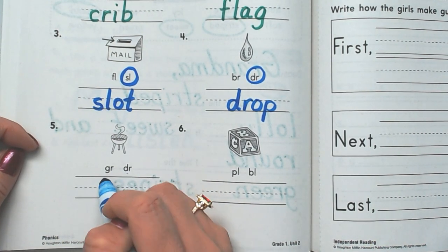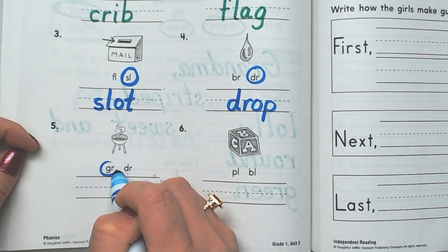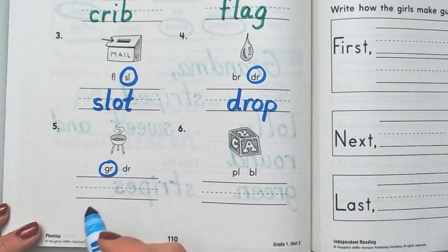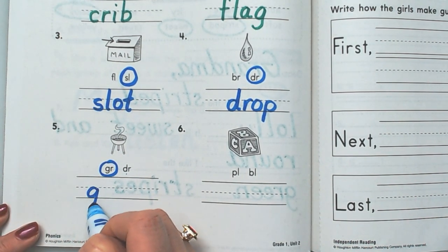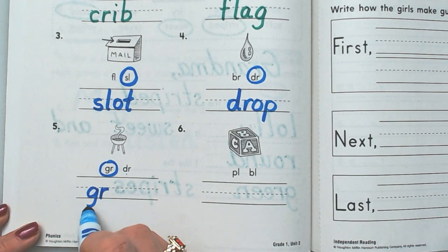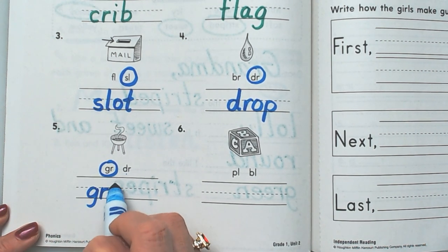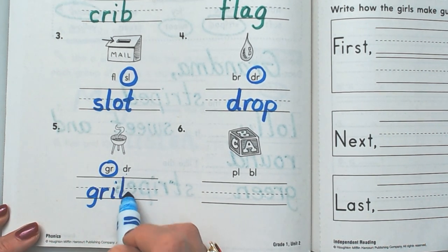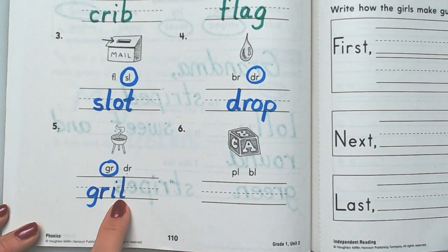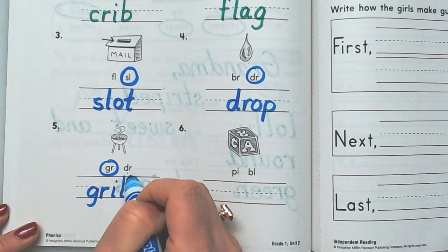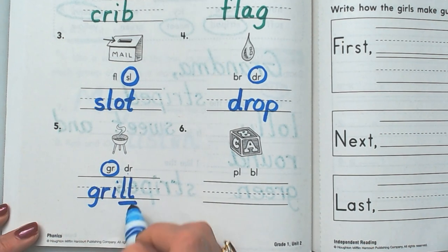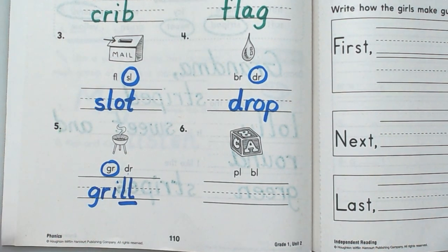Now we have a grill. GR, yeah obviously it's this one because D says D. It's not a drill, it's a grill. Circle the GR and write GR-I-L-L. And just so you know, there's actually two L's at the end of the word grill. It's one of those double final consonants.